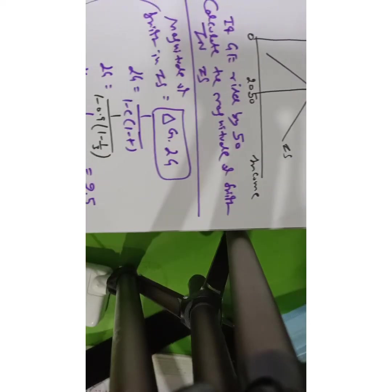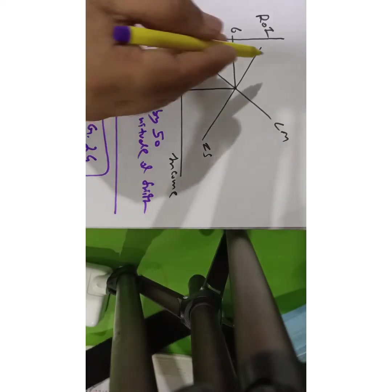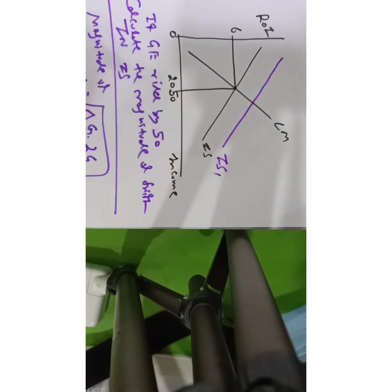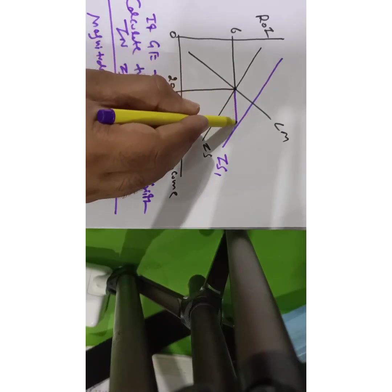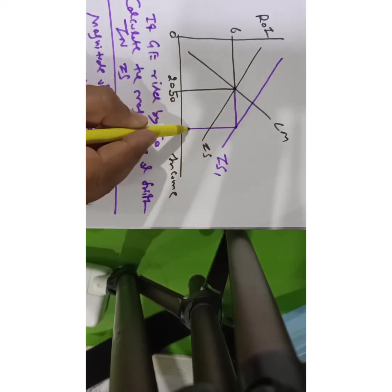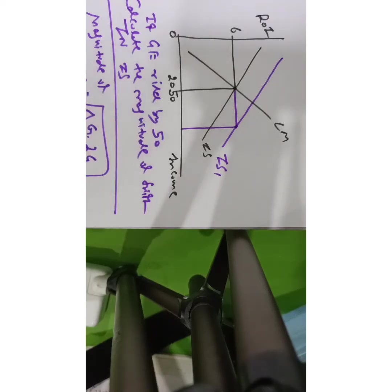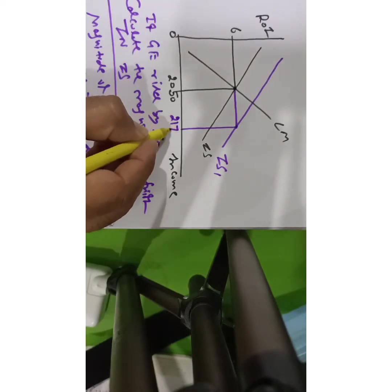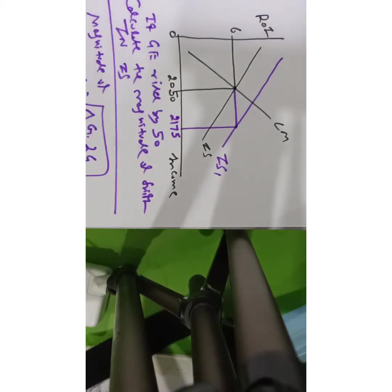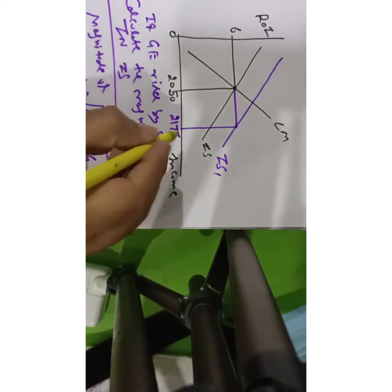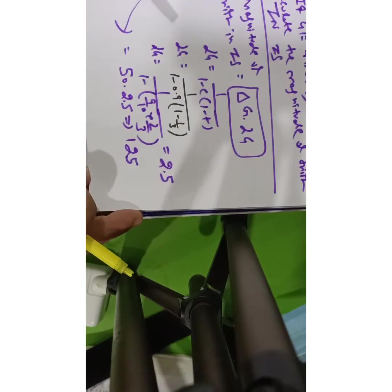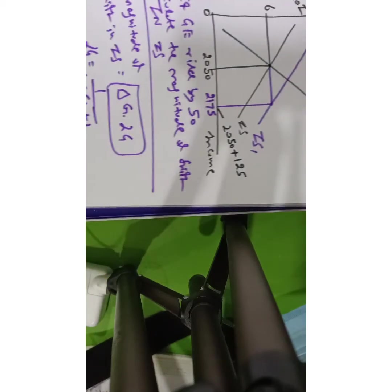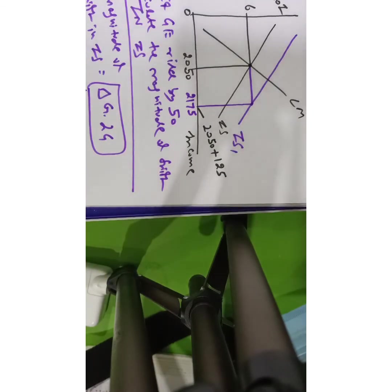Now let's understand this with the diagram. IS shifts to the right. If the rate of interest were kept constant, income would go from 2050 to 2050 plus 125, which equals 2175. So 125 is the magnitude of the shift in IS on the diagram.